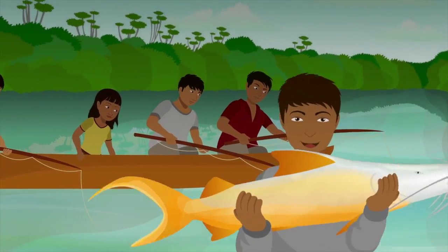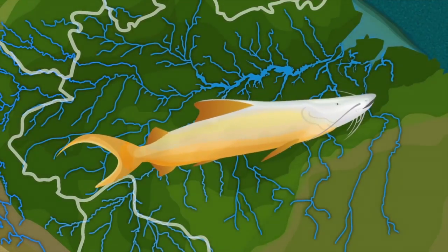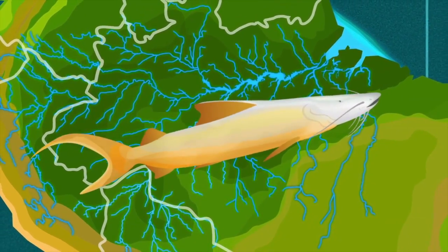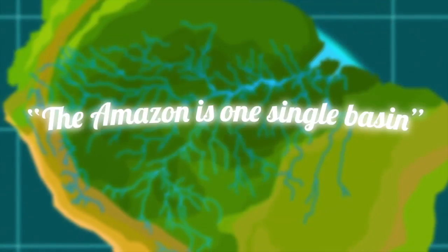These communities have embedded these fish as part of their culture. This is how the Dorada, our traveler fish, becomes an example of hundreds of species that survive traveling through an interconnected system in the one and only Amazon basin.